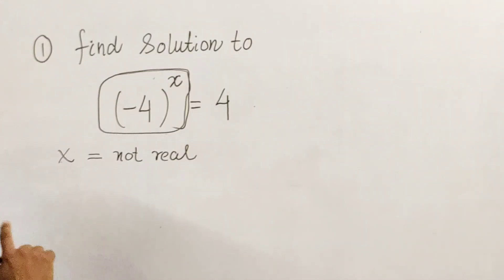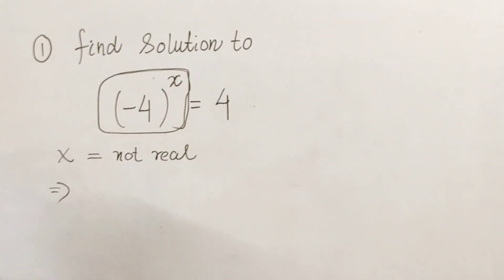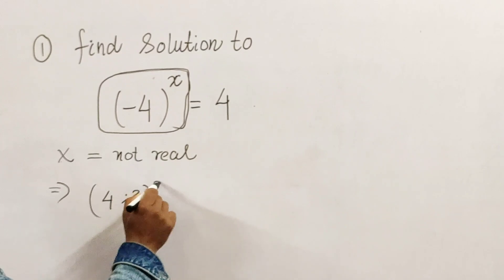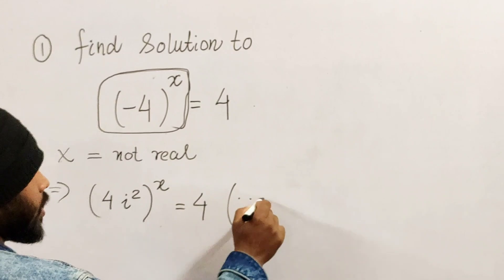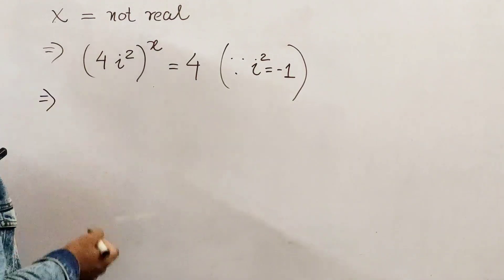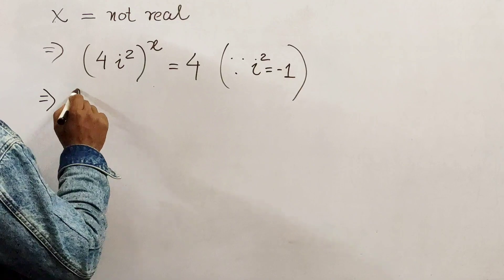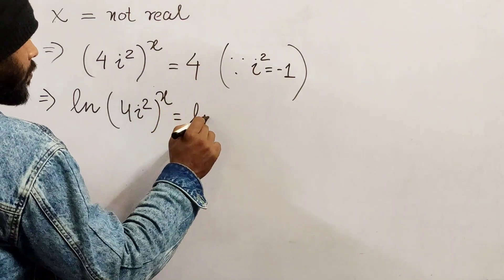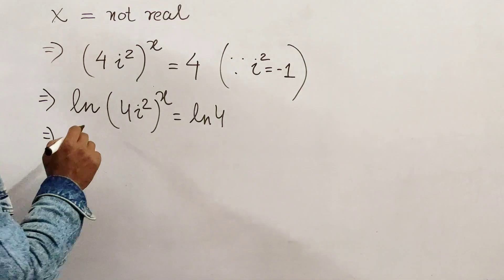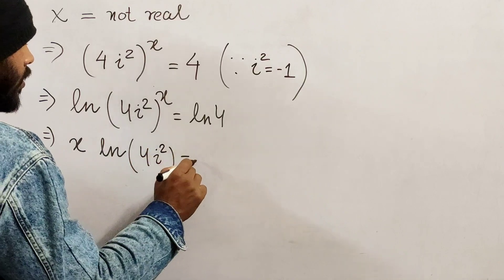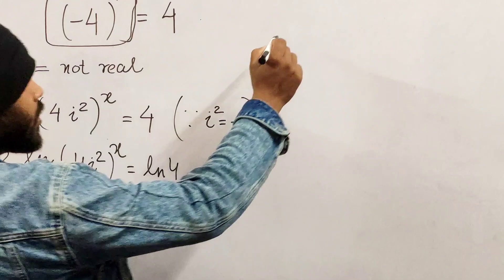Let's see if we can solve using complex numbers. What I will do is write -4 as 4i², so (4i²)^x = 4. You know that i² = -1. Now let's take log on both sides. Taking log, we get x·ln(4i²) = ln(4).